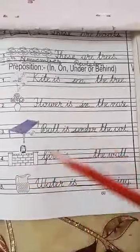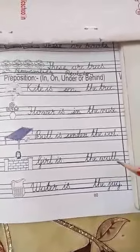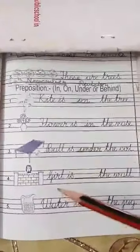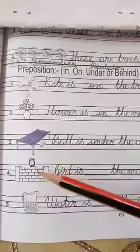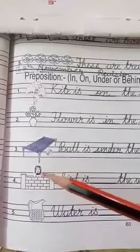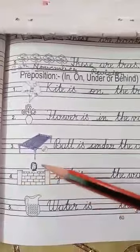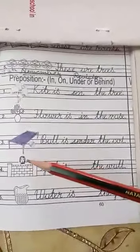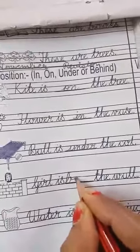Next number four. G-I-R-L girl I-S is dash T-H-E the W-A-double L wall. Girl is dash the wall. What will you do here? First of all, look here. Where is girl? Tell me anyone. Girl is behind the wall. Girl कहाँ है? Girl diwar ke pichay hai. To pichay ke liye kis ka use hota hai? Pichay ke liye behind ka use hota hai. So we will write behind here. Spelling of behind, say with me: B-E-H-I-N-D, behind. Girl is behind the wall.